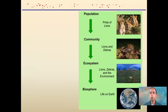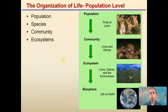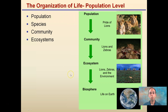From the organism, we can continue on to a population where we have multiple lions. From a population, we go to a community — we have lions and zebras. And from a community, we build onto an ecosystem, adding in the environment, which can ultimately lead to the biosphere, which is life on Earth. We're going to focus on populations, communities, ecosystems, and also touch on the biosphere throughout this biology unit.